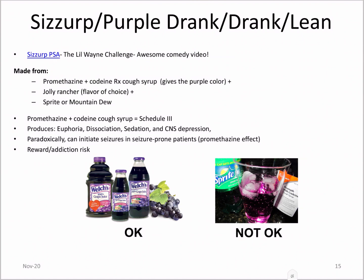One drug of abuse is purple drank — promethazine plus codeine cough syrup, mixed with Jolly Ranchers for flavor and Sprite or Mountain Dew. Adding the promethazine gives a kind of dissociation while the codeine gives the normal opioid effects. It has a slightly different high than just an opioid itself, but it does definitely have reward and addiction risk. If you haven't seen it, I greatly suggest you watch the SIRT PSA.